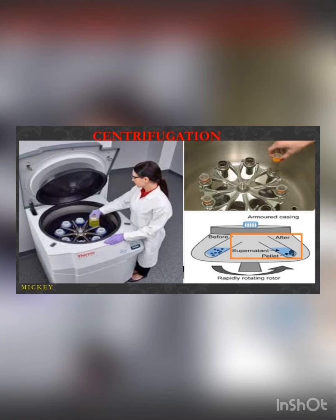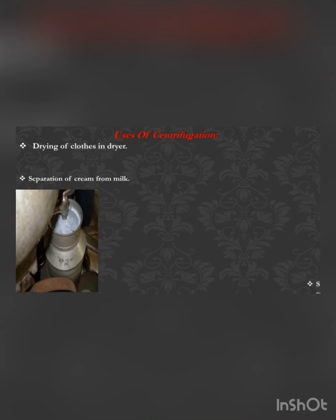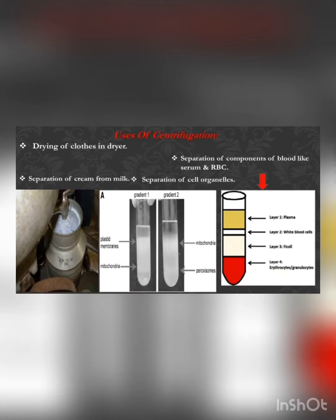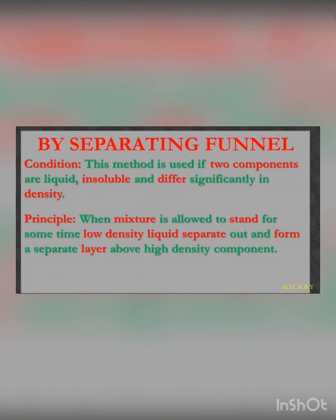Before centrifugation, all the solute particles are dispersed. After being placed in the machine, which works on a rapidly rotating rotor principle — very similar to the washing machines we have at home — the solute part settles as the sediment and the supernatant is left behind. Uses of centrifugation include drying clothes in a dryer, separating cream from milk, separating the various components of blood, and separating cell organelles from the cell.